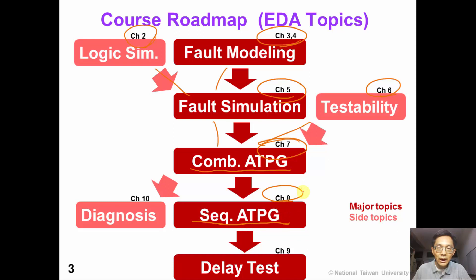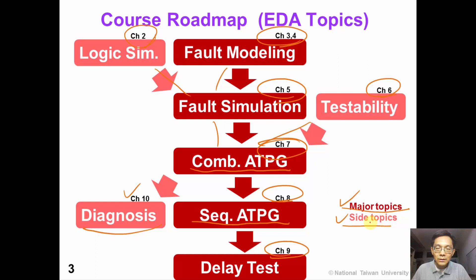Combinational ATPG and sequential ATPG are covered in chapters seven and eight respectively. Then we can move on to chapter nine, delay testing. If you are interested in defective chip diagnosis, you can also watch chapter ten. In this roadmap, we will show main concepts in deep red color and side topics in pink color.